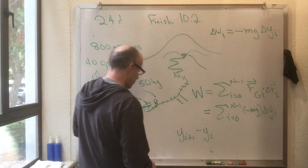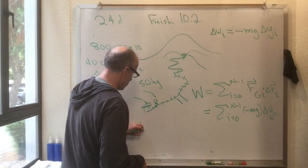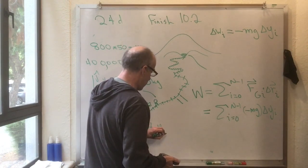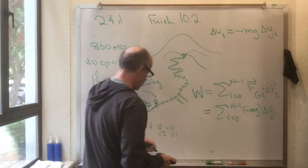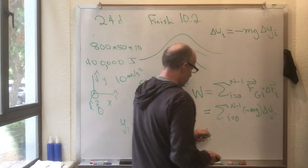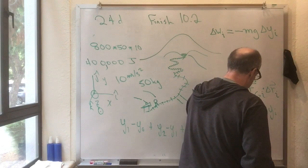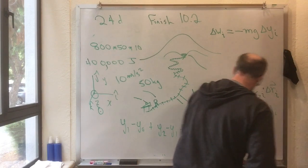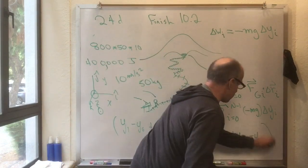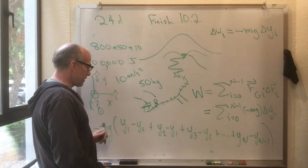Let's write out the zeroth term. The zeroth term is y1 minus y0. The first term that I am supposed to add into this is plus y2 minus y1. The second term is plus y3 minus y2. And plus dot dot dot plus the last term is yn minus yn minus 1. And, of course, this entire thing is multiplied by minus mg. So, I've just written out what this sum means.